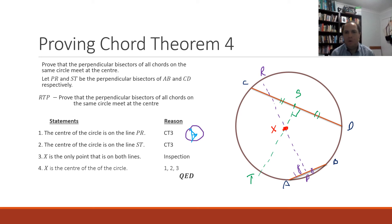Now we could add in more chords but it would just show the same thing, that the perpendicular bisector will run through that same point there X.